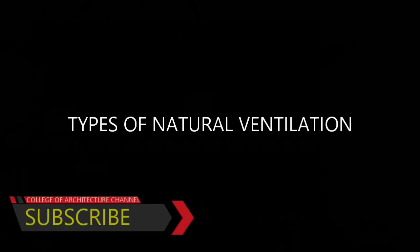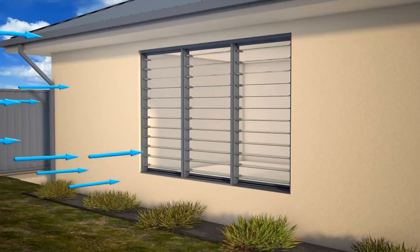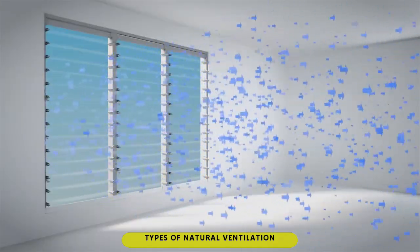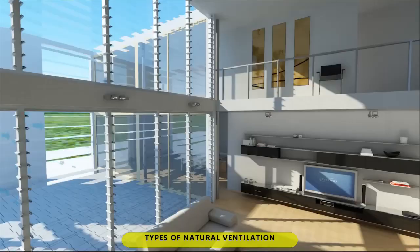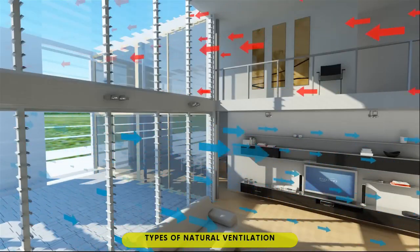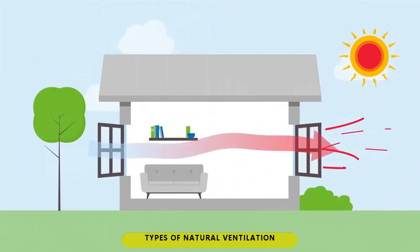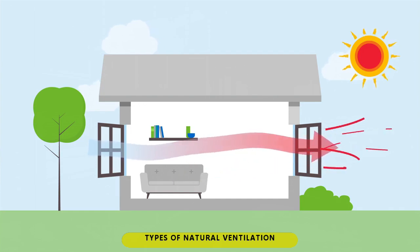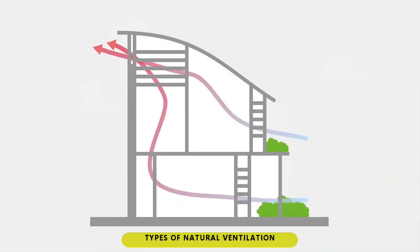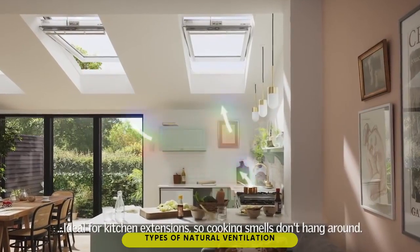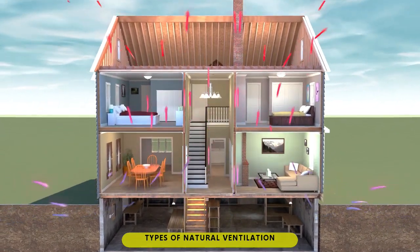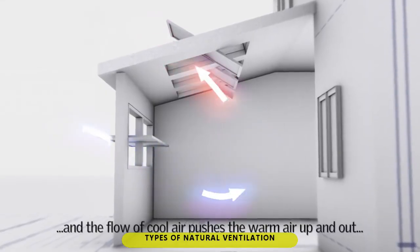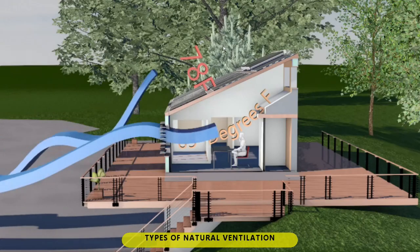Types of natural ventilation. 1. Single side: an indoor space that has one-sided wall opening, in which the cold air enters on the lower portion of the window and hot air exits on the upper portion. 2. Cross flow: an indoor space that has two-sided wall opening, in which the cold air enters on the high-pressure area and hot air exits on the low-pressure area. 3. Stack or thermal buoyancy: an indoor space that has one or several wall openings, in which the cold air enters while hot air rises up and exits on an atrium, roof vent, or a higher wall opening.